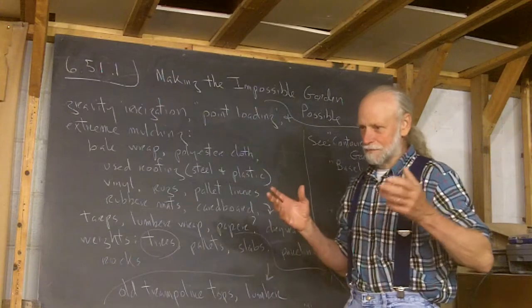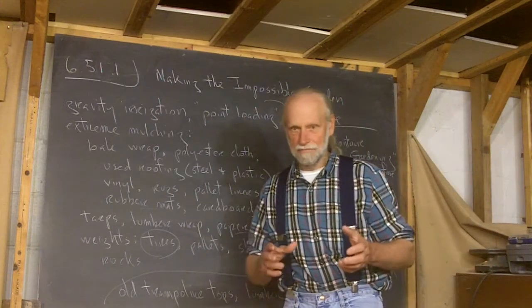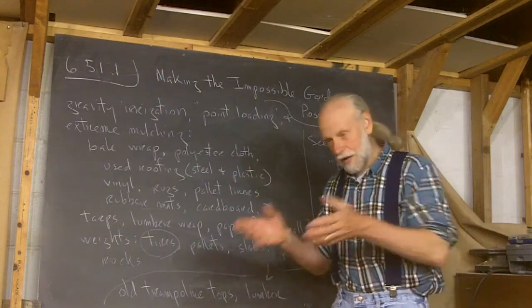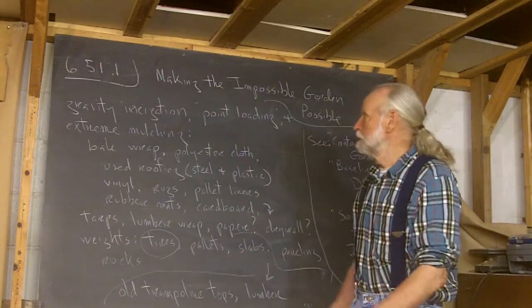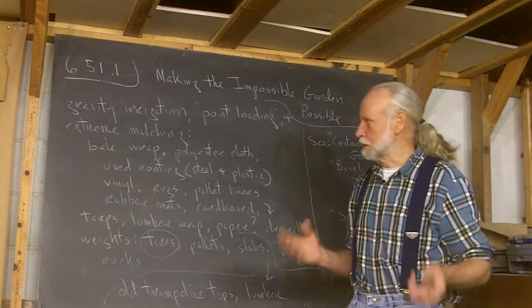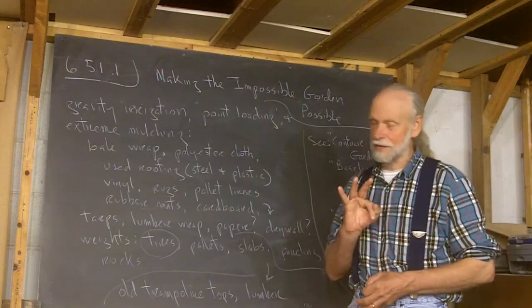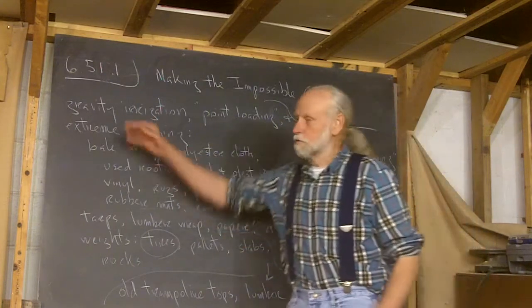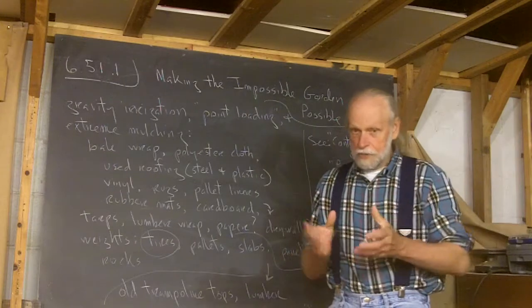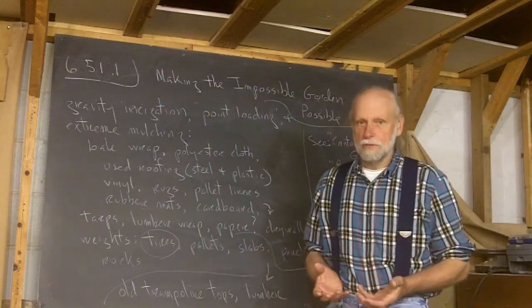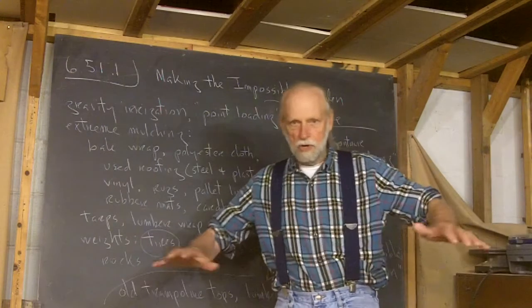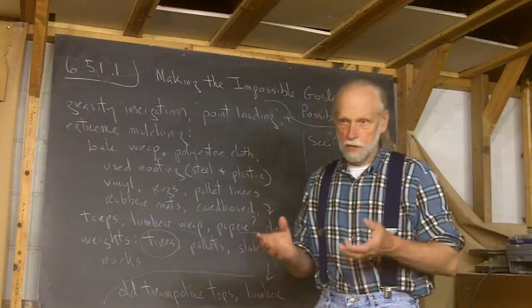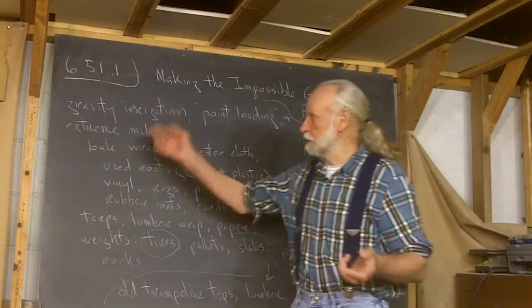In the last video, I showed the extreme limitations that I have with this area naturally and that I've put on myself. So how can it be possible? Well, there are three things that I can think of that have been critical. One is gravity irrigation. Once I can get to the ground, once I've got the sod defeated and can actually get to the ground and dig in it, that land is in a place where I can irrigate it by gravity.